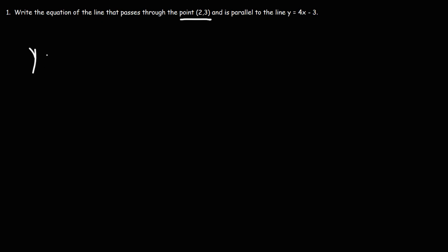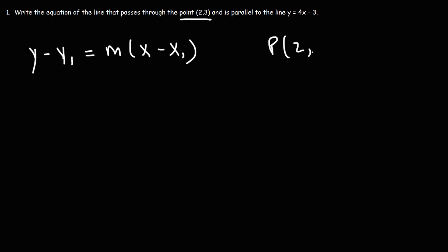The formula we're going to use in this video is the point-slope formula: y minus y1 is equal to m times x minus x1. The point (2, 3) gives us the values of x1 and y1. x1 is 2, y1 is 3.